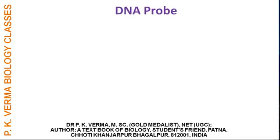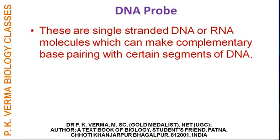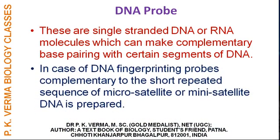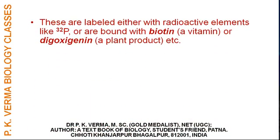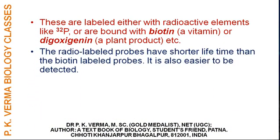DNA probes are single-stranded DNA or RNA molecules which can make complementary base pairs with certain segments of DNA. In the case of DNA fingerprinting, probes complementary to the short repeated sequences of micro-satellite or mini-satellite DNA are prepared. These are labeled either with radioactive elements like 32P (the normal atomic weight of phosphorus is 30), or are bound with biotin (a vitamin) or digoxigenin (a plant product). The radio-labeled probes have a shorter lifetime than the biotin-labeled probes, so they are easier to detect.